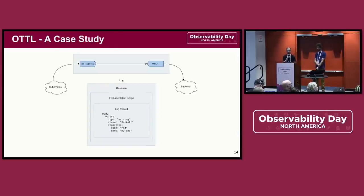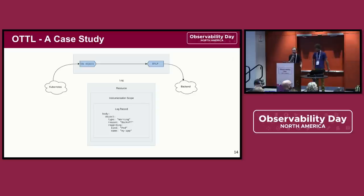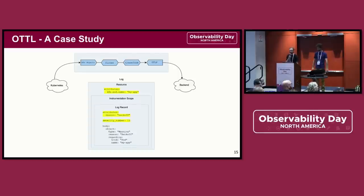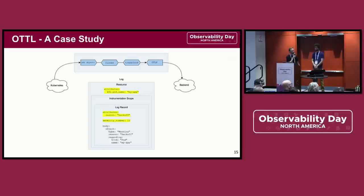Coming back to our use case, let's take a look at how the data we have can solve our issues. We see a reason in the log body, so if we can determine what sorts of events we don't want, we can filter them out using those fields. We also see information regarding the pod, so we can extract those details into attributes on the OTLP payload. Our backend will later use these attributes for querying. When we use OTTL to solve this problem, we find that we can fulfill our requirements with only two components: the filter processor to drop the data we don't want, and the transform processor to transform what we keep. The log on this slide demonstrates the final result — it has metadata showing the pod name, event type, and severity for the log, all while keeping the log intact.